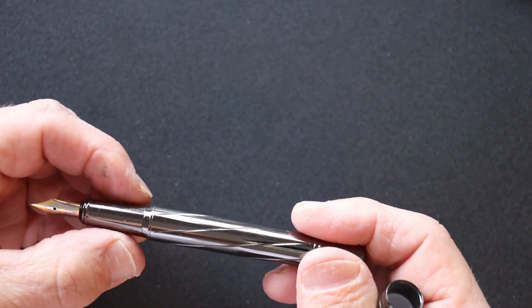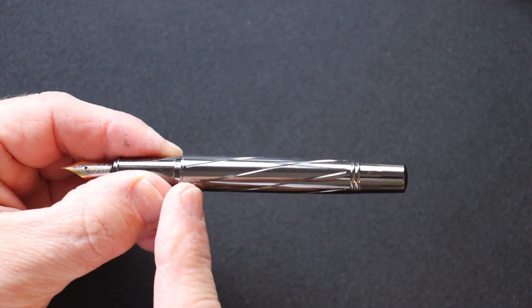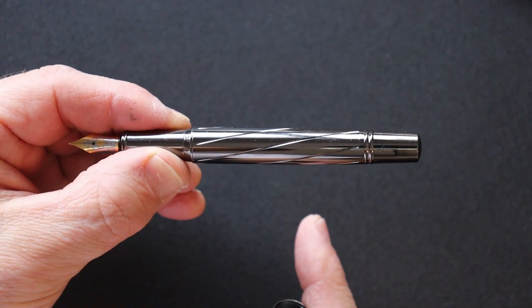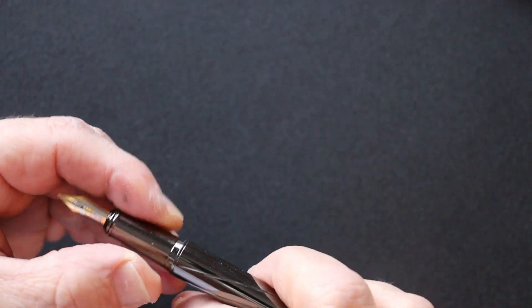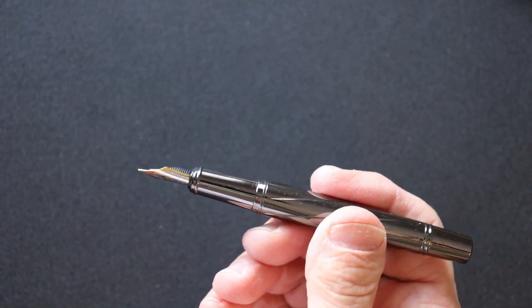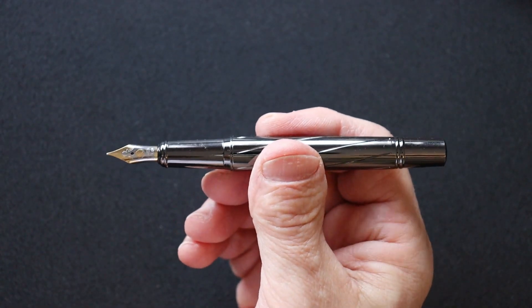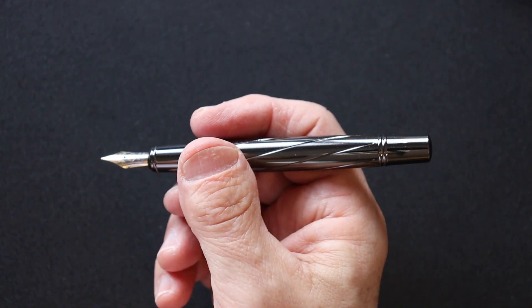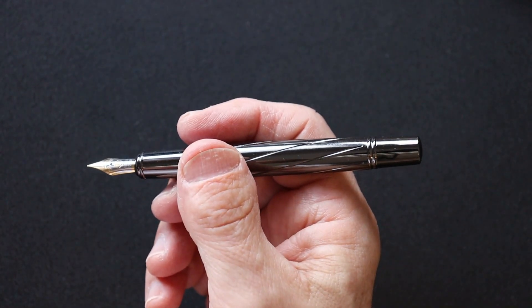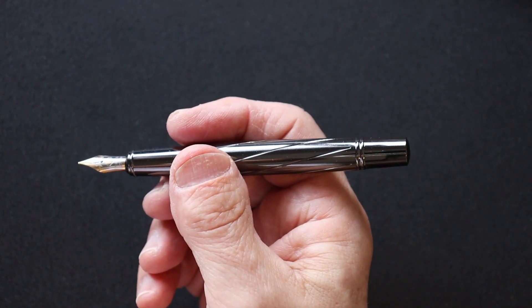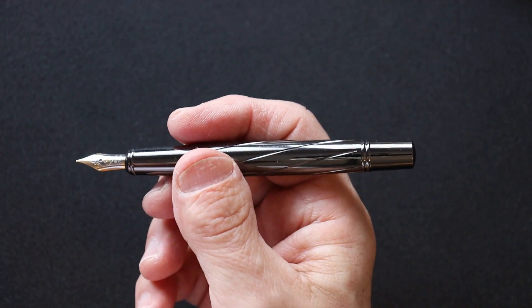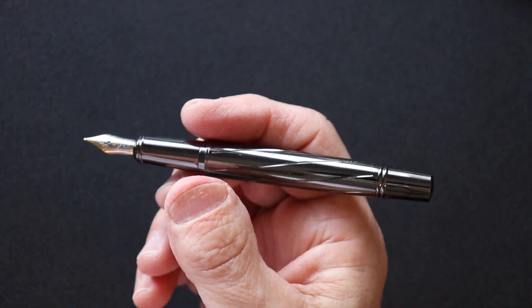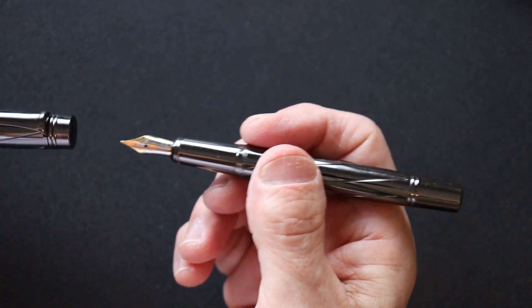The grip is 10.5 millimeters at the midpoint. The grip length is 24 millimeters. The body girth at the widest point is 12.5 millimeters. The weight of the body alone is 36 grams, which is pretty heavy. It is a metal pen. You also have metal pens such as the Diplomat Excellence A, and that body is only 28 grams, so it's about eight grams heavier here.